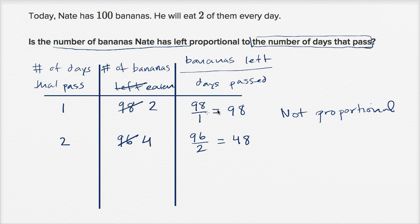So that would be two, and that would be four. And then these ratios would always be two. But that's not what they asked for. They wanted us to compare the number of bananas left to the number of days that pass.